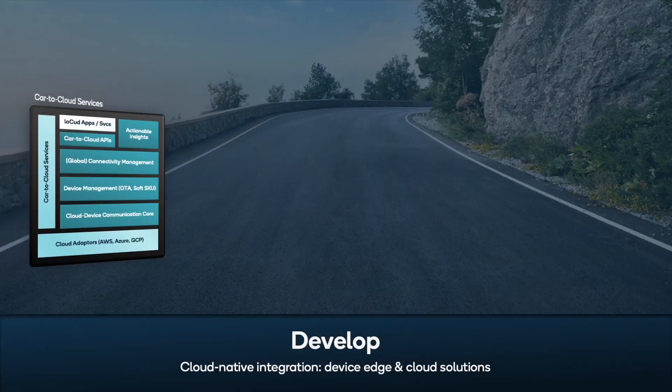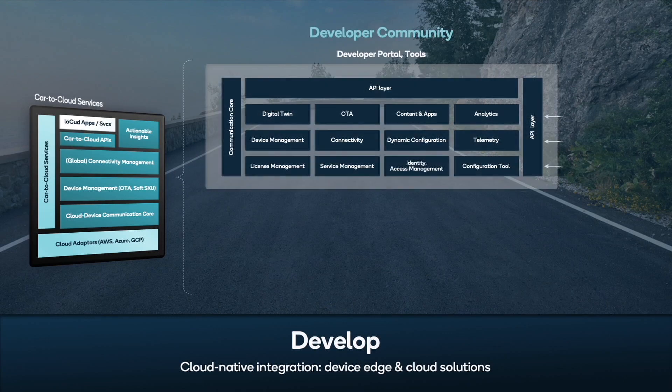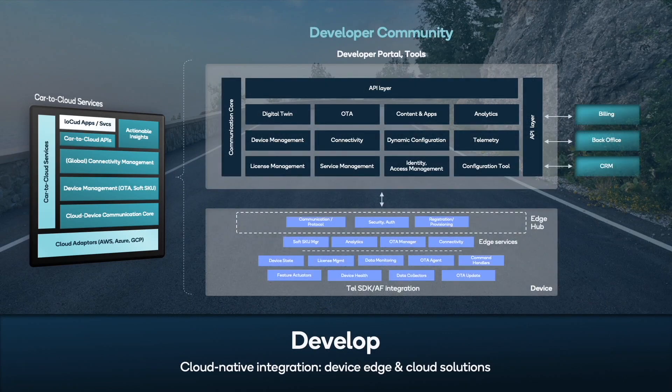Car2Cloud platform, by itself, is not the only thing we are offering. Car2Cloud platform is built on APIs, which means that everything you are seeing here — whether it's a portal or the actions we have been showing — all are enabled through APIs provided by Car2Cloud.